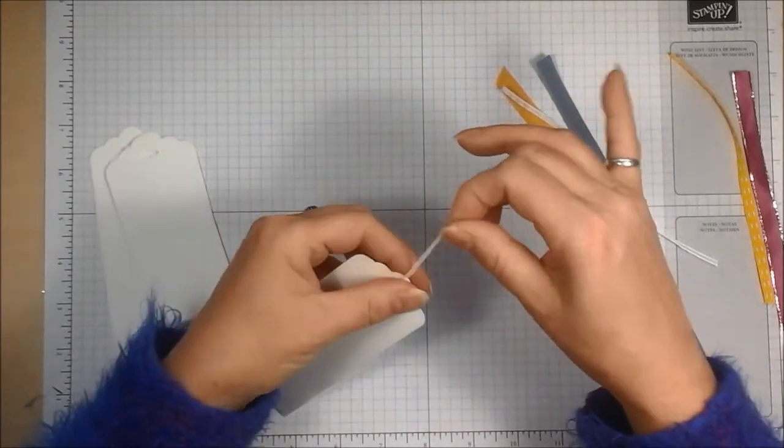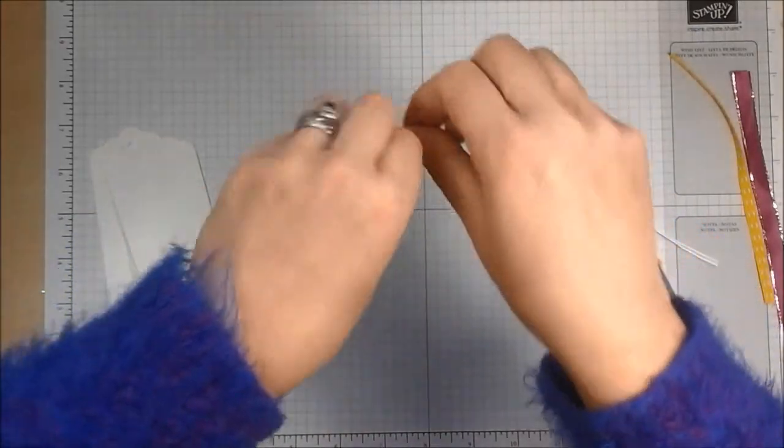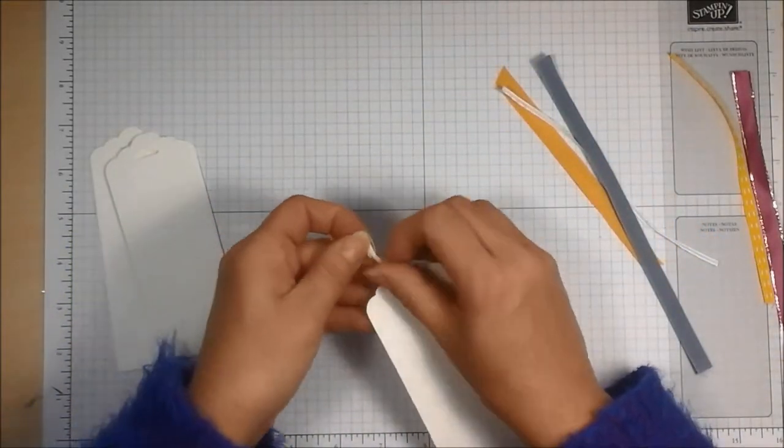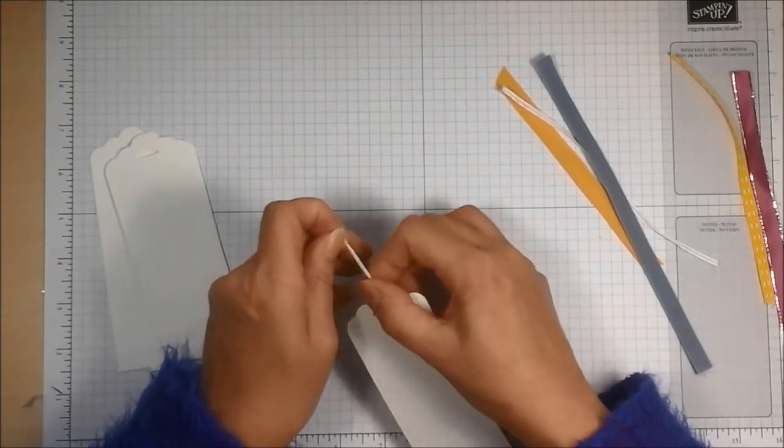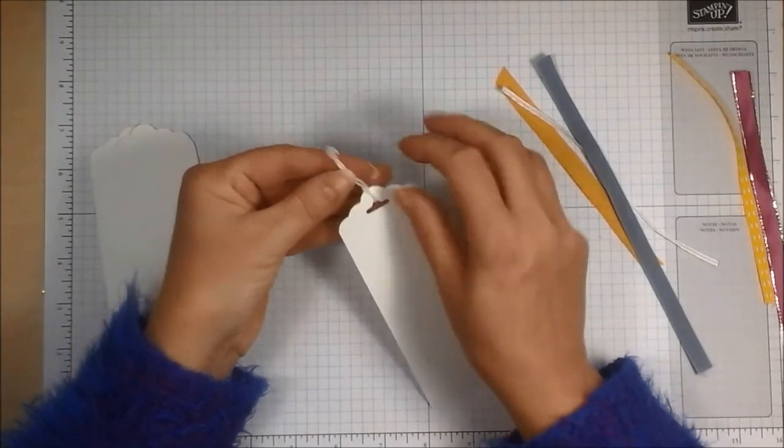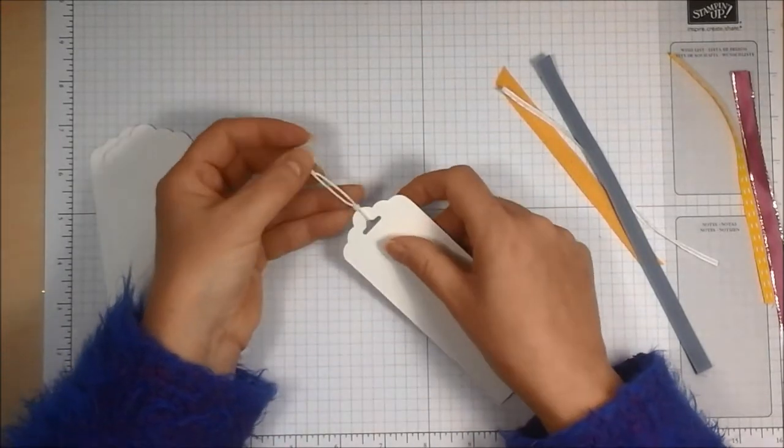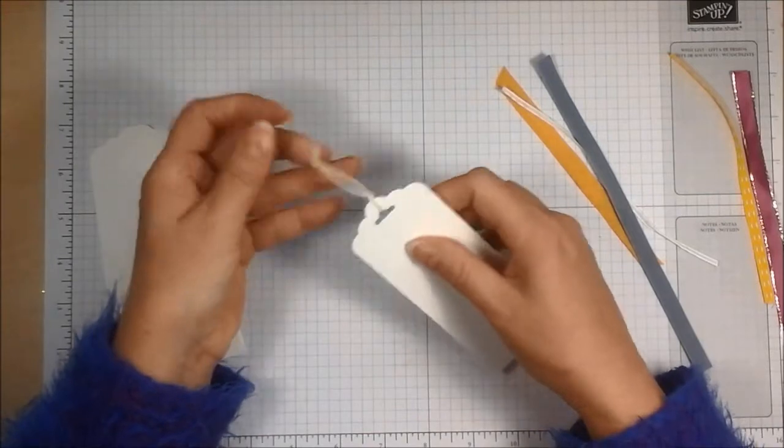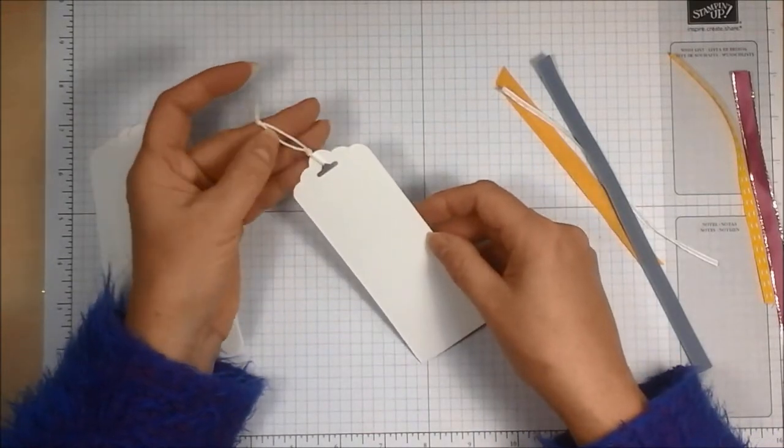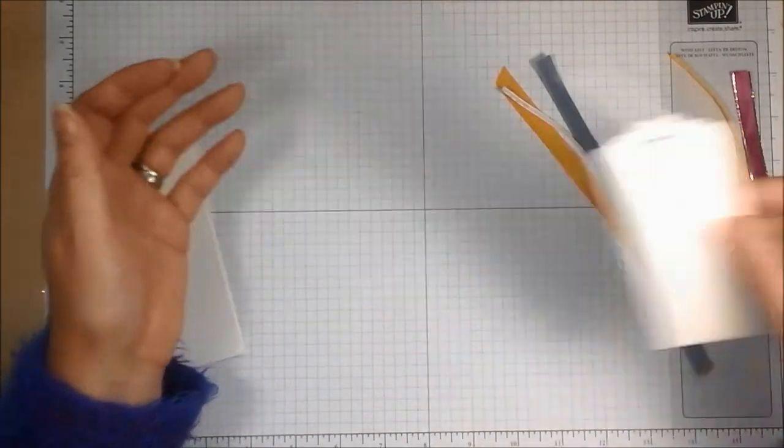but then tie another one much closer to the slot, and normally you would probably want to use a longer piece of twine for this, depending on how much of an attachment you want at the end here. So you've got a knot at the end and a knot further down, and that just stops it from wandering up and down the twine that you've put on.